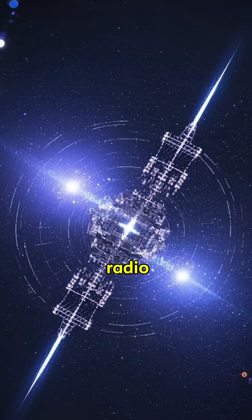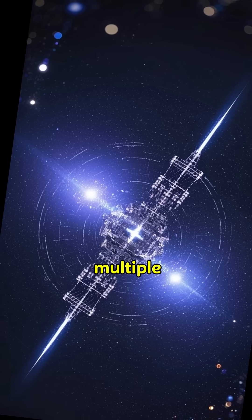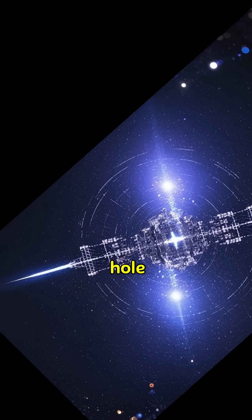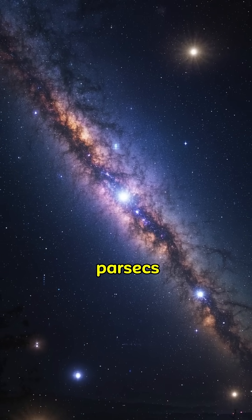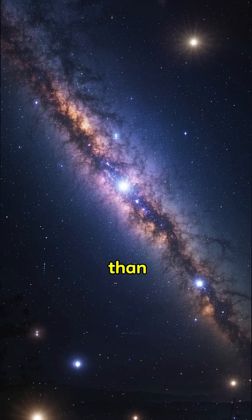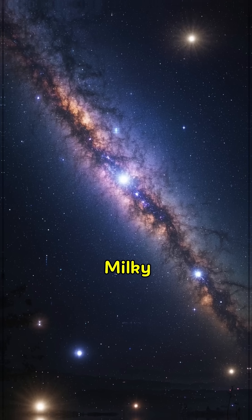That means it has two sets of radio lobes, evidence of multiple eruptions from its central black hole. Its outer lobes span nearly 4 million parsecs, or about 12 million light-years. That's more than 100 times the size of our Milky Way.